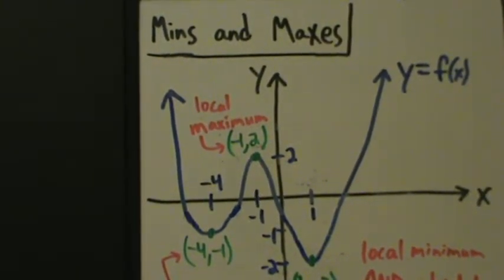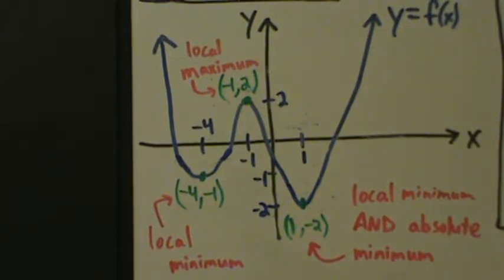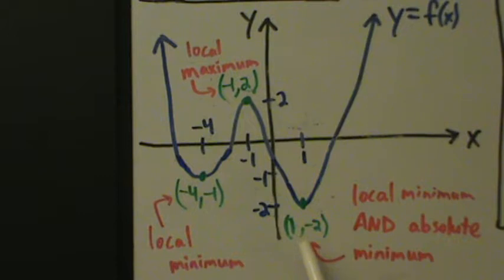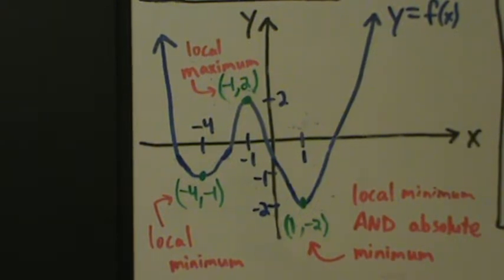In this video we're going to start talking about minimums and maximums. Looking at this picture, we have a function y equals f of x. Here at negative 4, negative 1, we have what's called a local minimum. At negative 1, 2 is a local maximum. And at 1, negative 2 is another local minimum. And this is actually also what's called an absolute minimum.